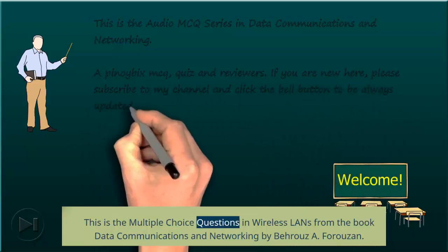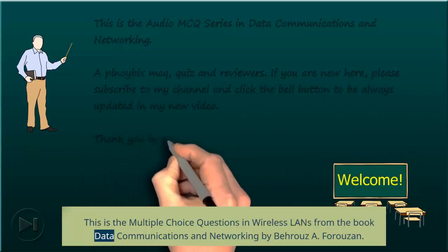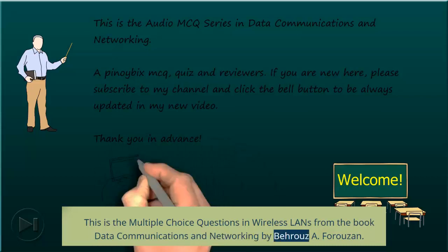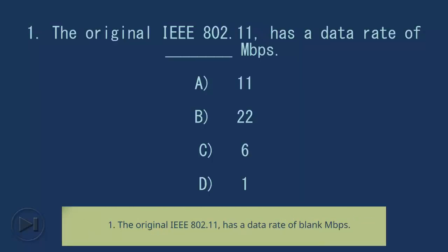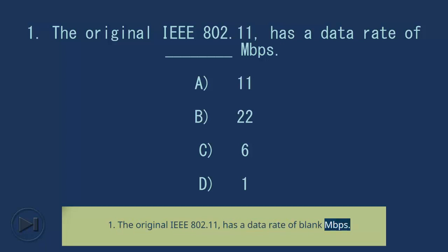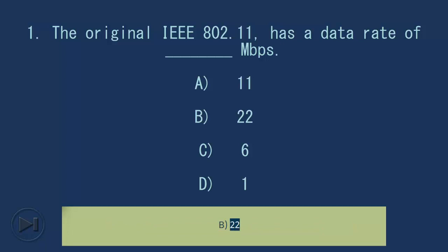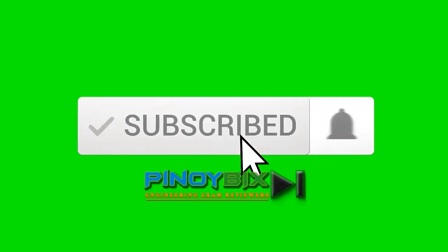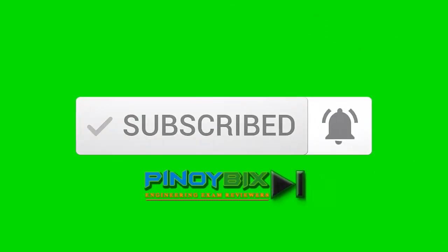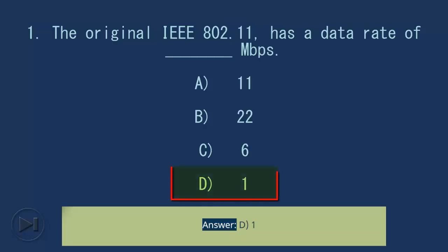This is the multiple choice questions in wireless LANs from the book Data Communications and Networking by Forouzan. Question 1: The original IEEE 802.11 has a data rate of blank Mbps. A. 11, B. 22, C. 6, D. 1. Answer: D. 1.